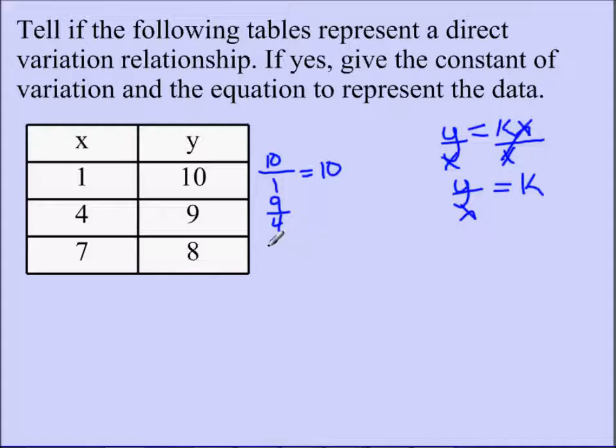And if I do the second one, 8 over 7, it also doesn't reduce down to 10. All these values here, my y over x values, are different. So this is not a direct variation.